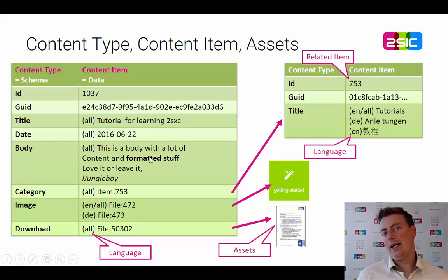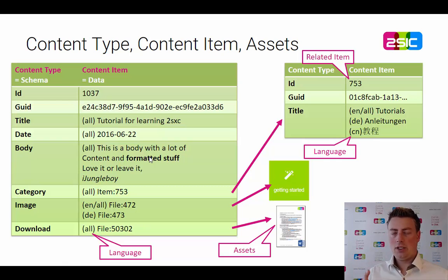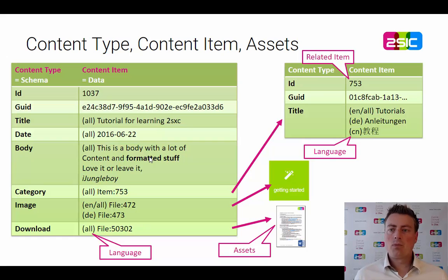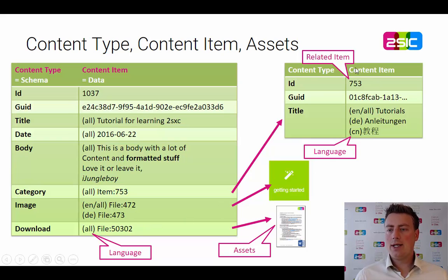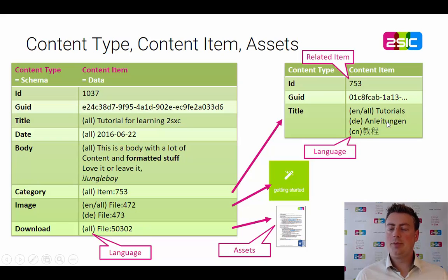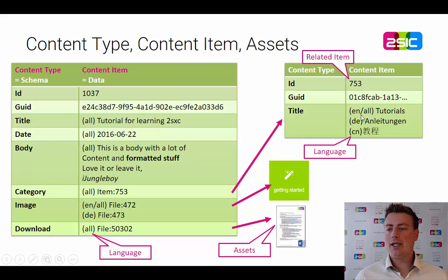There's the data, which is the content item itself. Each person will have a content item, each blog entry is a content item. And you have languages — in this example, almost everything is not translated, except for one item which has a different image. The category has the English term 'tutorial' as the fallback, a German term, and a Chinese one. In a language which is not translated, it would fall back to English.